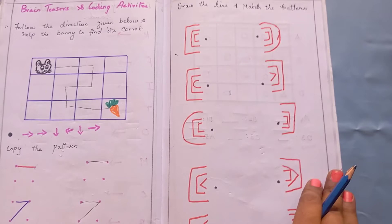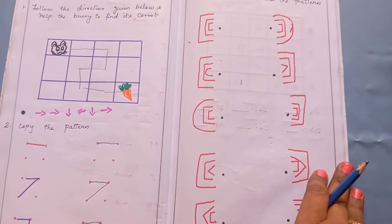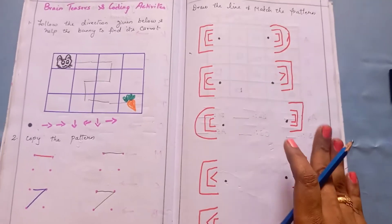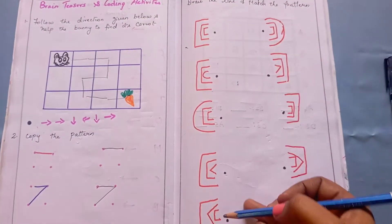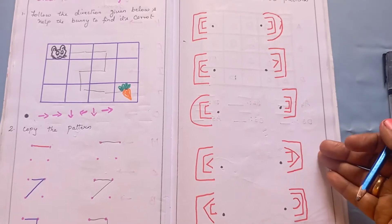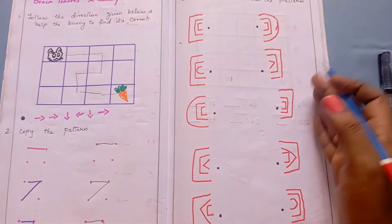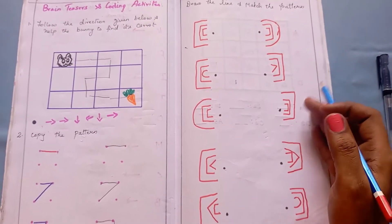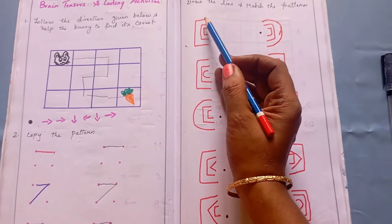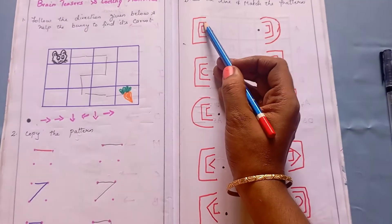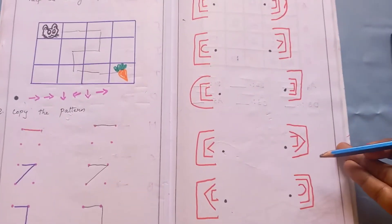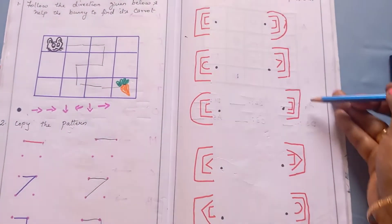The third activity is draw a line and match the pattern. In this worksheet, it is a logical reasoning and brain boosting activity. There is a left side pattern and a right side pattern. Kids are going to match the left side pattern with the corresponding right side pattern. For example, there are three half squares on the left side, and kids connect them to the matching pattern on the right.